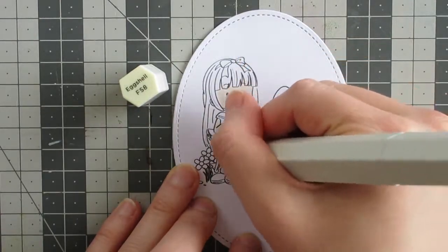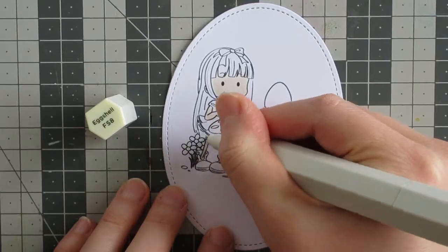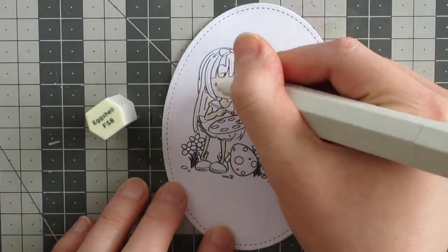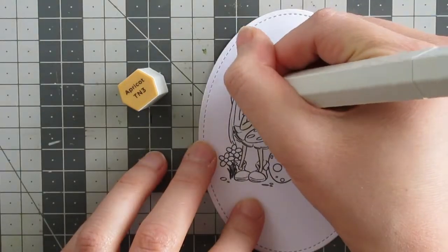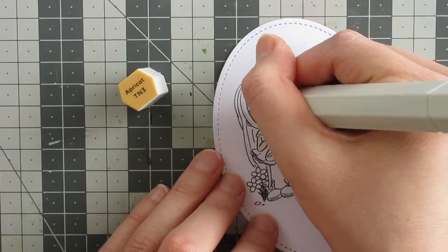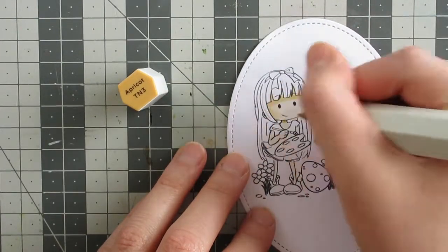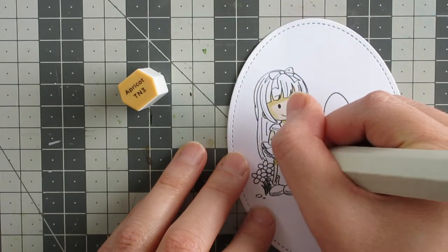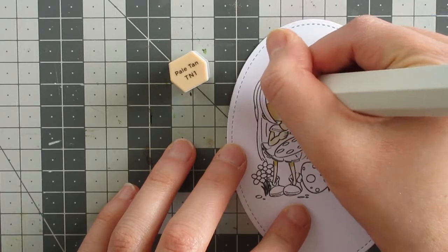I'm using the Easter Amy image which is image number 35 and I started by printing her onto some alcohol marker friendly paper. I sized her just in a word document and printed it out and then I've die cut her with a lawn fawn stitched oval die. I chose this stitched oval because I thought it looked almost like an egg which seemed appropriate and then I'm going to start coloring her in.